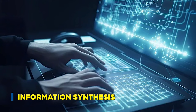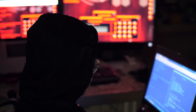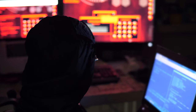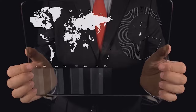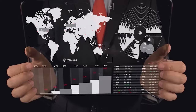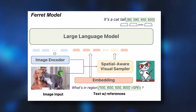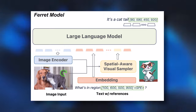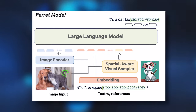Information Synthesis: The final step involves synthesizing all the acquired information, enabling the model to provide accurate and detailed descriptions corresponding to specific parts of the image mentioned in the text.